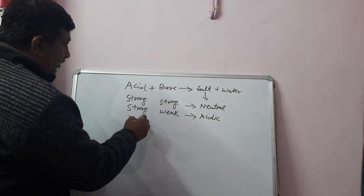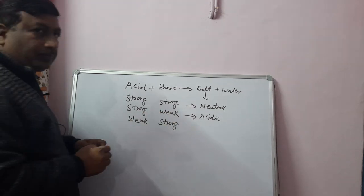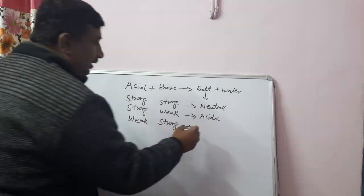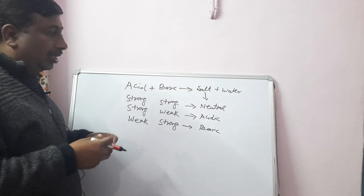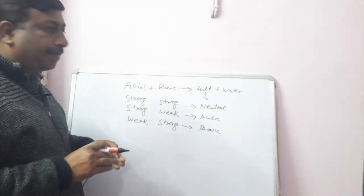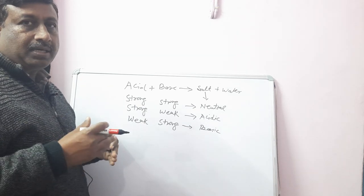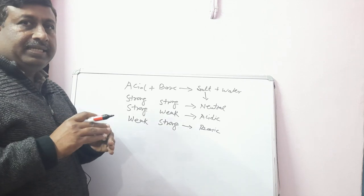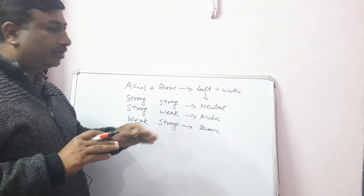If acid is weak and base is strong, then the basicity is not neutralized by the acid, so some basic material is present in the salt and the salts are basic in nature. So there are three types of salt. If neutral salt is dissolved in water, there is no increase or decrease in pH. If acidic salt is dissolved in water, the pH decreases. If basic salt is dissolved in water, pH increases. The increase or decrease in pH depends upon the type of salt.